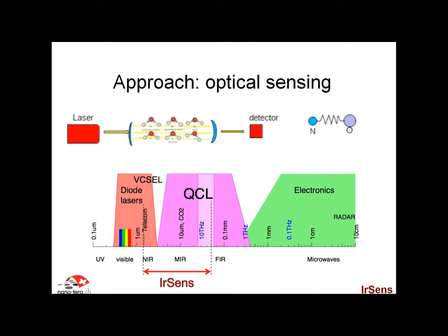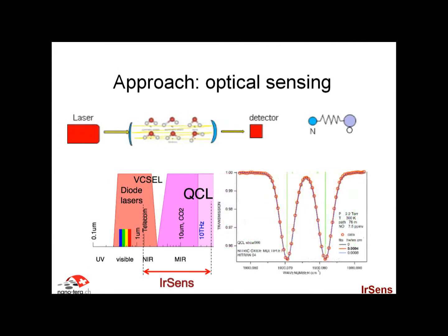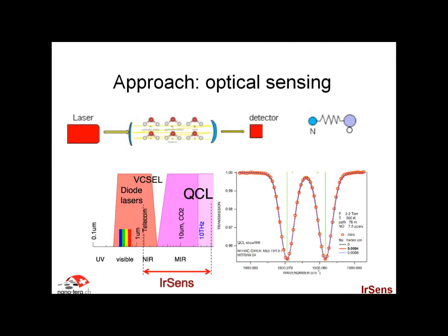And this is an example of an absorption line — this is just NO measured. And you see you have extremely sharp, well-defined lines that basically identify the molecule that you want to detect. So in the frequency range we are interested in, we would like to address everything between the near infrared all the way to the deep mid-infrared using different sources and detectors.